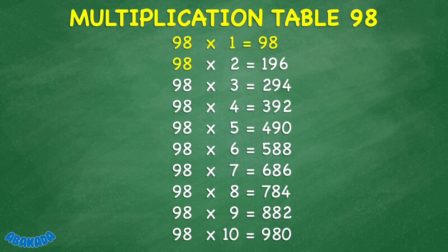98 times 2 equals 196. 98 times 3 equals 294. 98 times 4 equals 392. 98 times 5 equals 490. 98 times 6 equals 588. 98 times 7 equals 686. 98 times 8 equals 784.